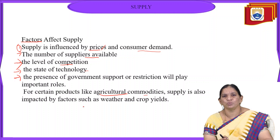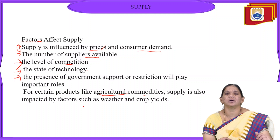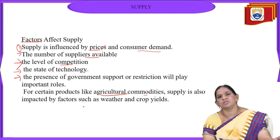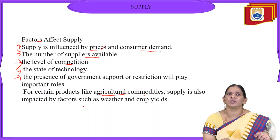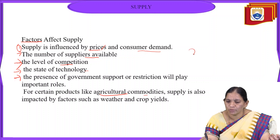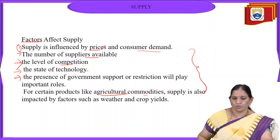In India, we are dependent on monsoon climate and wait for the rainy season to start agricultural harvesting. So for agricultural and other necessary commodities, natural factors like weather, natural state of soil, and other conditions are also very important. These are some of the important factors which affect the supply of a commodity.